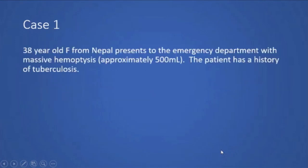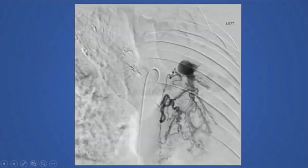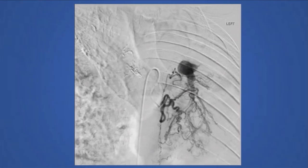The first case is a 38-year-old female from Nepal that presented to the emergency department with massive hemoptysis. The approximate volume was about 500 milliliters, and the patient has a history of tuberculosis. This patient was referred to angiography, and we have a reverse curve catheter that has selected the left bronchial artery. Once we select that artery and inject, we can see there is a grossly abnormal vessel.